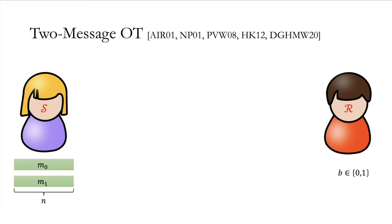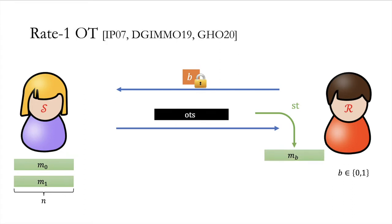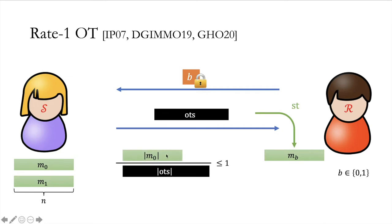In this work, we're interested in two-message OT where there are two messages sent between the parties. In the first round, the receiver will encrypt his choice bit B and send to the sender, keeping some secret state. In the second round, the sender will encrypt her two messages and send to the receiver, and then the receiver can use the secret state to recover Mb. If we look at the message sent from the sender to the receiver, which we call OTS, and consider the ratio between the length of a single message M0 to the length of OTS, we know that information-theoretically OTS cannot be shorter than M0, so this ratio is at most one.